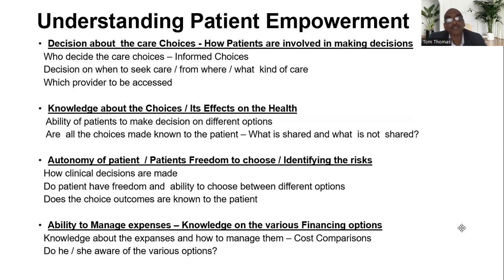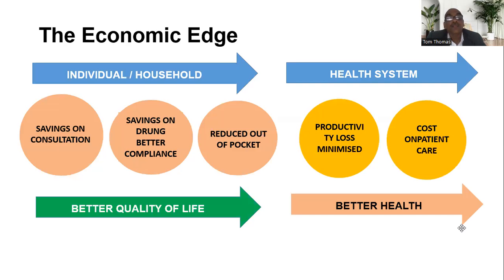The third area is the ability to manage expenses and knowledge about various financing options. Patient empowerment is multi-dimensional — it is not just about the ability to take part in decision making, but about the patient being a stakeholder in the entire healthcare process. When we talk about the economic edge of empowering patient education, we talk about two levels: the individual or household level, and the health system level.